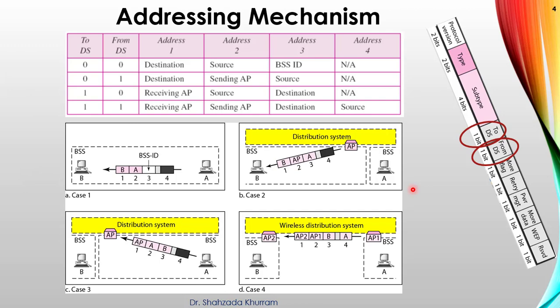Okay, how address mechanism is working. Let's discuss with this. You can see in the right side we put a frame control in detail. So we use to DS to be a distribution system and from DS distribution system. So you can here see to DS. If both bits are zero zero, to DS zero, from DS zero, it means destination, source, BSS ID. BSS ID means SSID, we also called SSID. Here you can see BSS. And if a frame moving from A to B onward, so there is A in MAC address and then B MAC address and here is SSID for this area, for BSS.